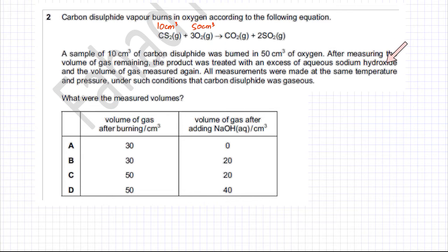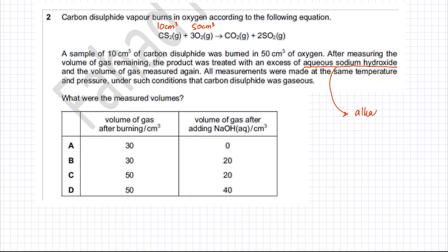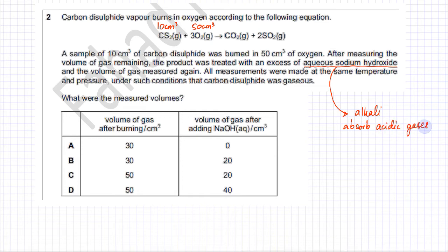The product is treated with sodium hydroxide (NaOH). Remember that NaOH is an alkali, and alkalis react with acidic gases — they absorb acidic gases. In the above reaction, the acidic gases are carbon dioxide (CO₂) and sulphur dioxide (SO₂). So when the products are treated with aqueous NaOH, the acidic gases are absorbed, and the volume of gas is measured again.